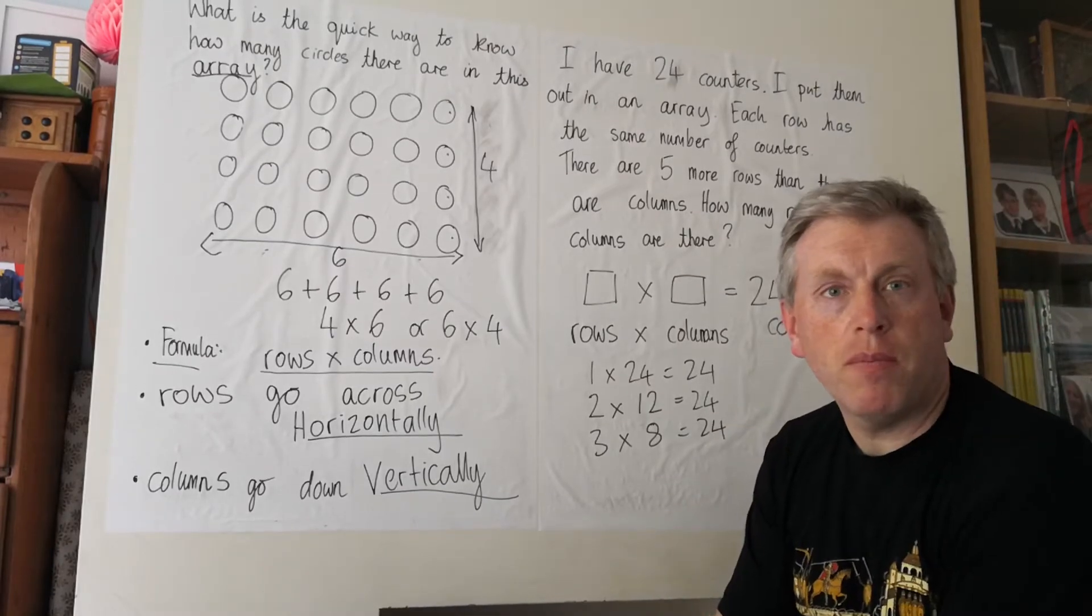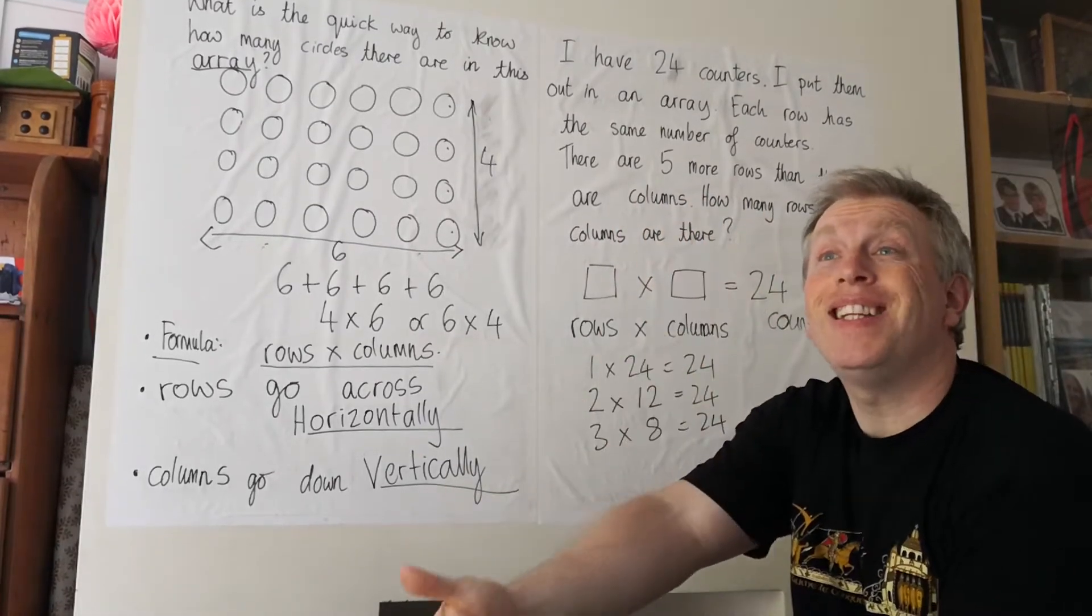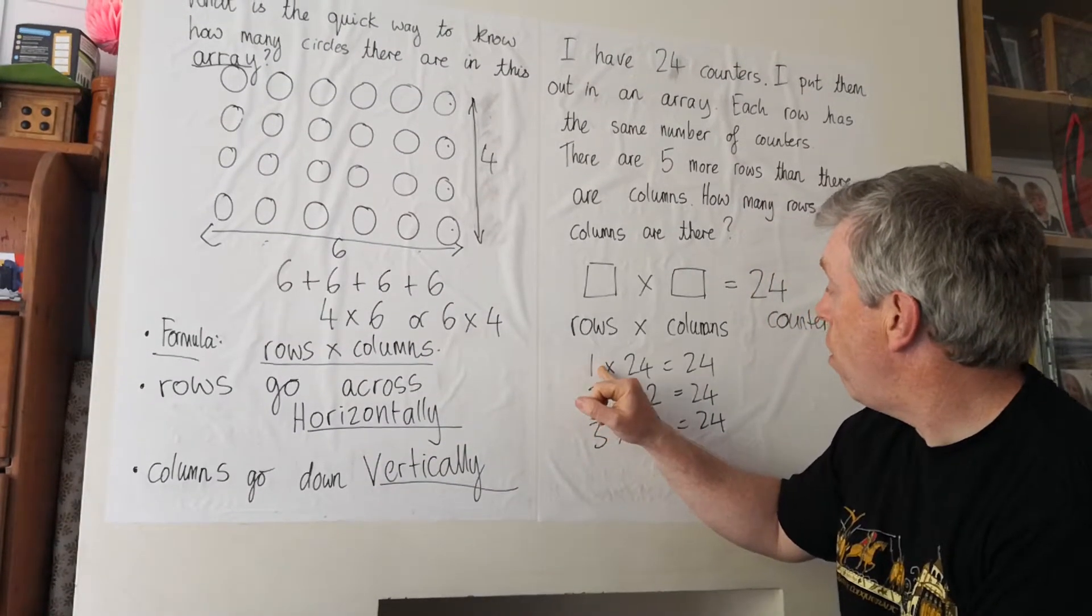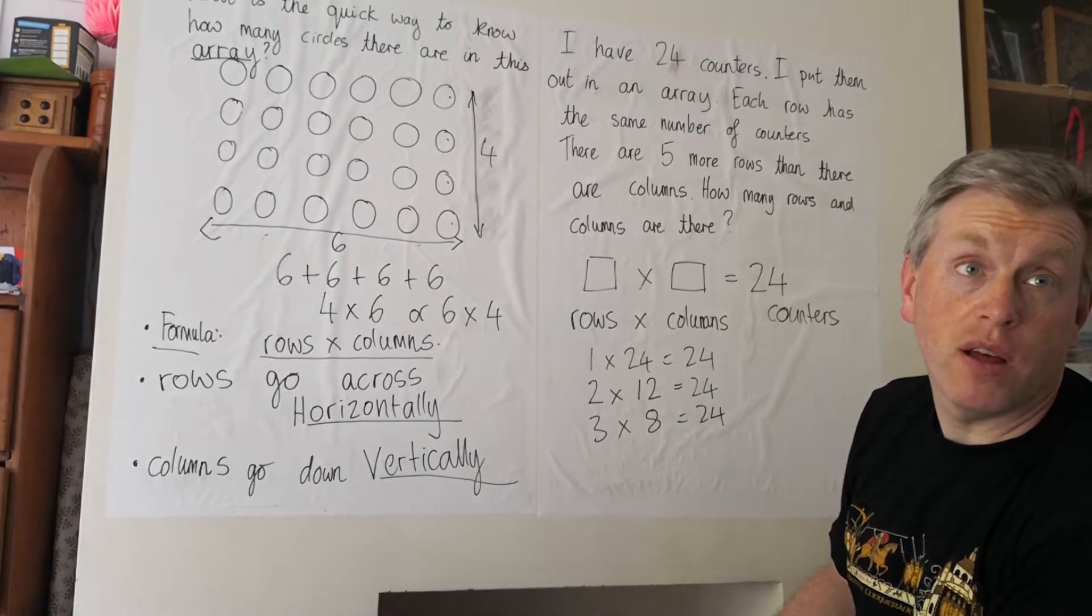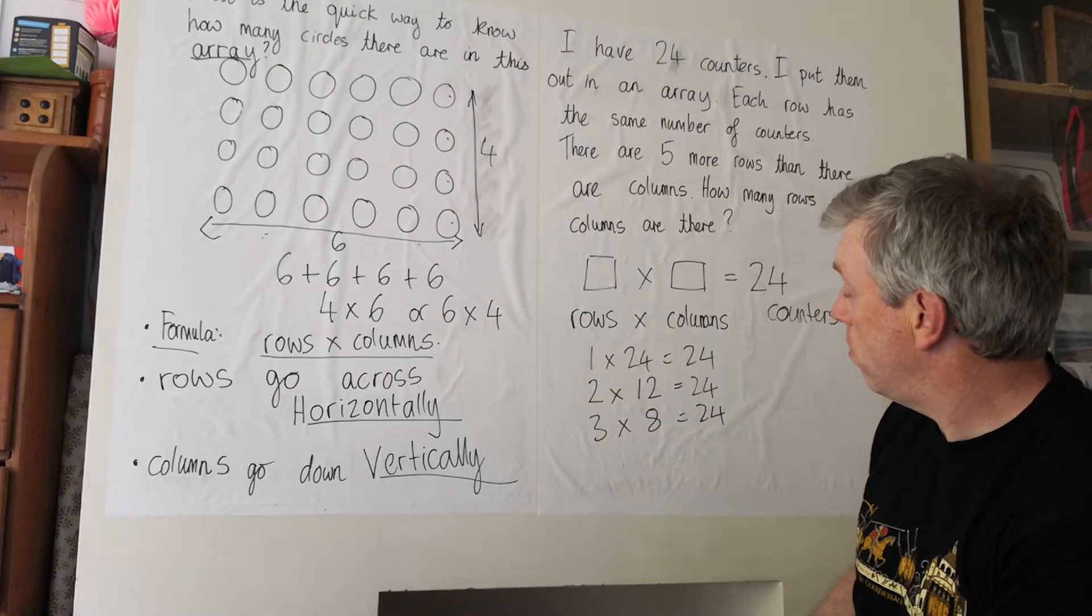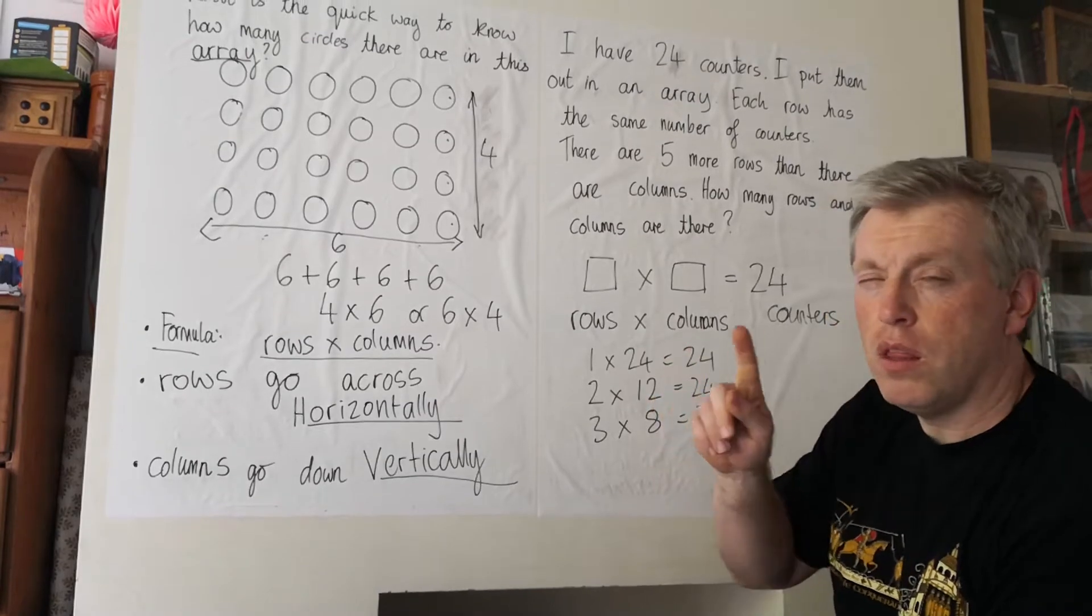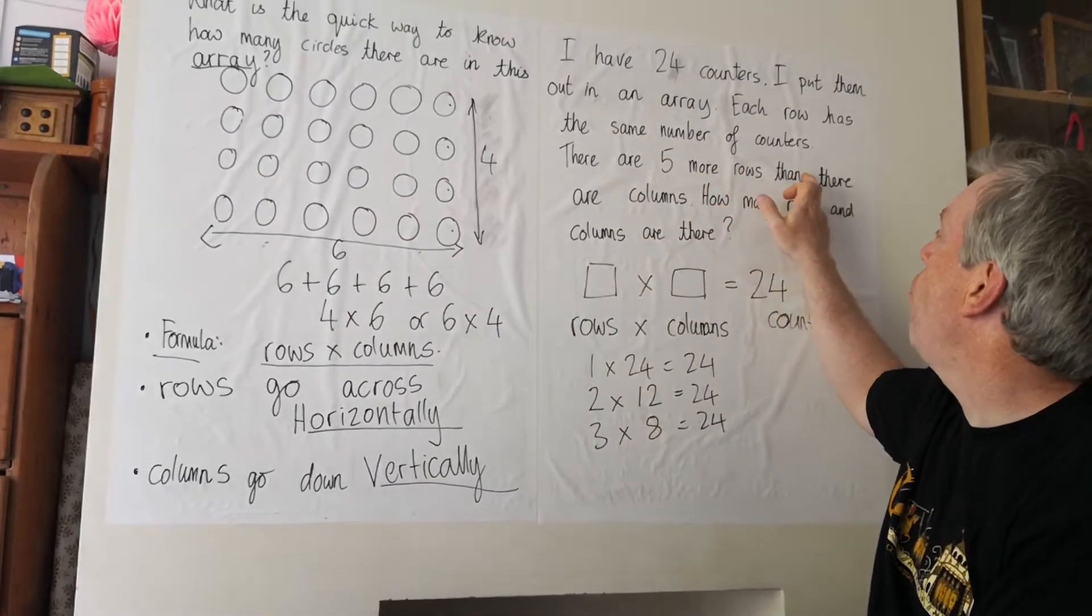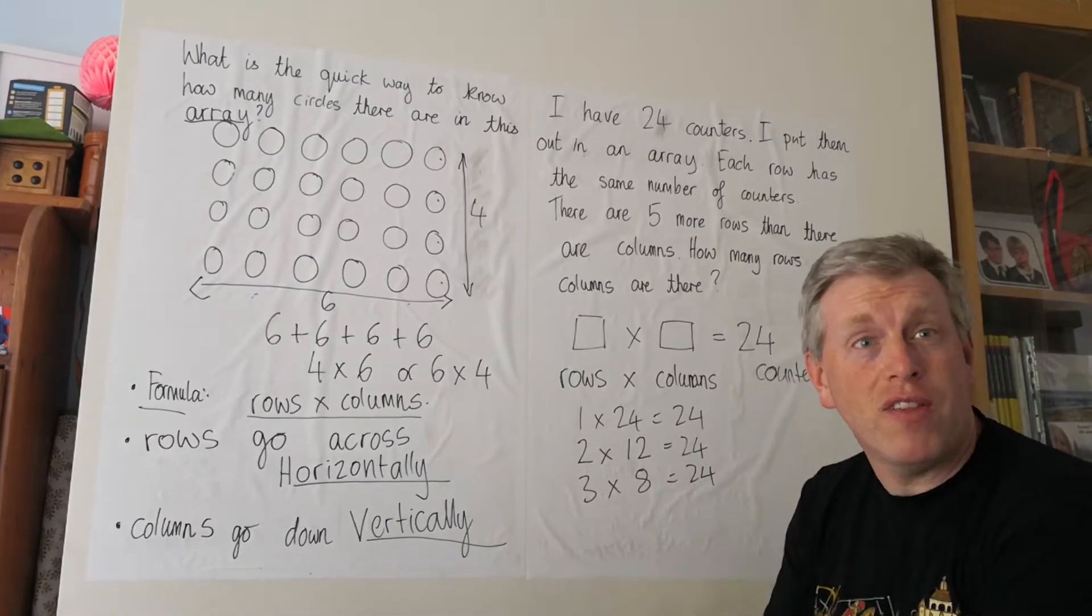But I've forgotten the second part of my question. There are five more rows than there are columns. That means the difference between the two numbers is five, isn't it? One row, two columns. Twenty-three is the difference between them. Two rows, twelve columns, twenty-four. Three rows and eight columns. The difference is five, but our question says there are five more rows than there are columns. Well, here there are five more columns than there are rows, so I don't think that can be right either.